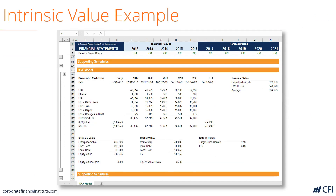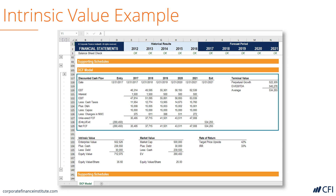Let's check out an example of intrinsic value. Here is a discounted cash flow model that calculates the net present value of all future cash flows. The model starts with a cash flow forecast schedule highlighted here. Below that, using the NPV function in Excel, we calculate the intrinsic value of the business and even on a per share basis, which for this company is $35.60. We can then compare that intrinsic value of $35 to the market value, which is $25. So this company looks cheap in the market relative to its intrinsic value.